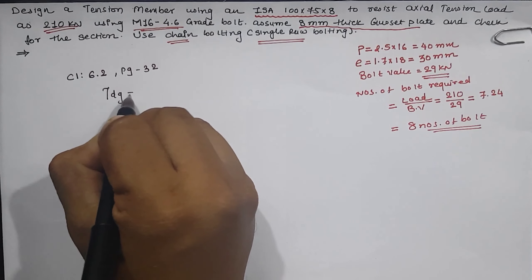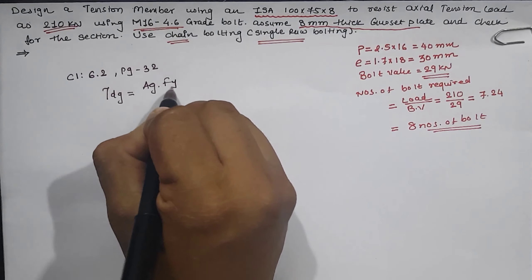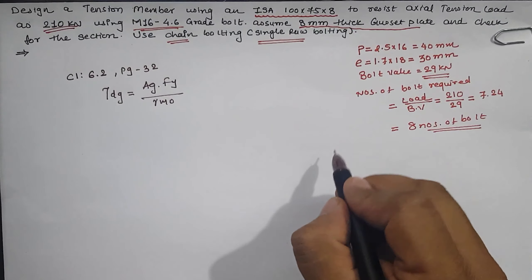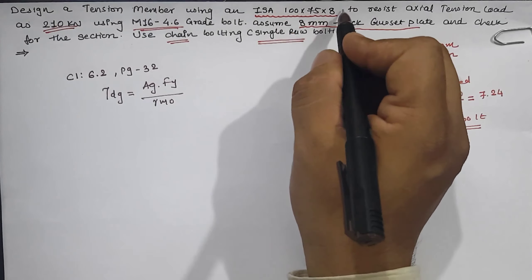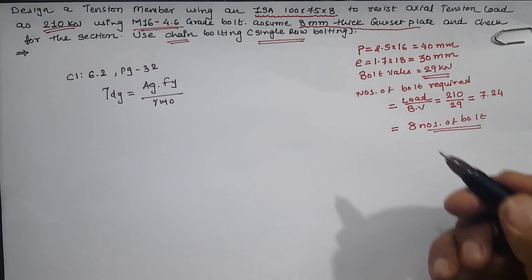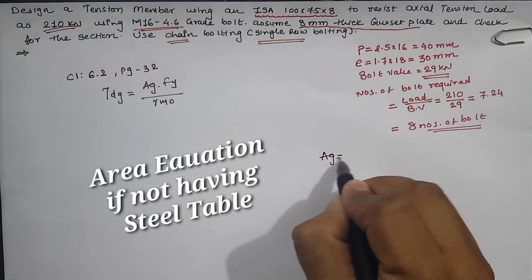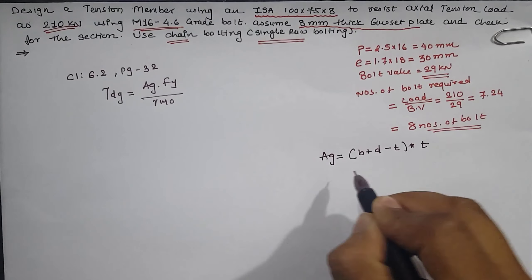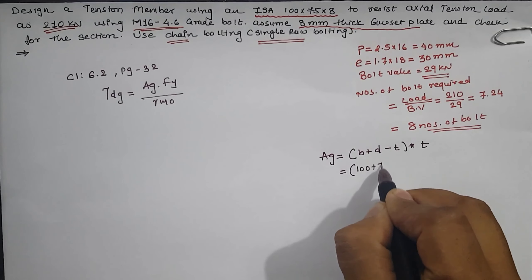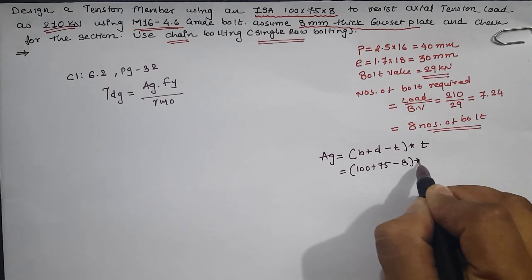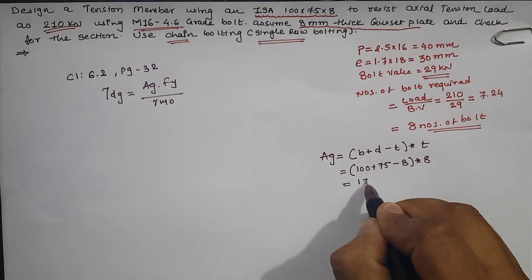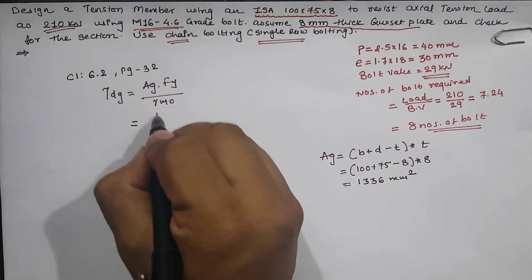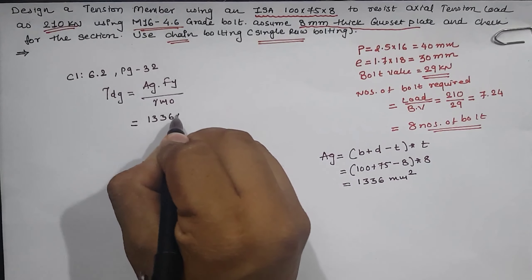From clause 6.2, page 32, Tdg = Ag·fy / γm0. For the gross sectional area Ag, we have ISA 100×75×8. If we do not have the steel table, the gross area can be calculated by the equation (b + d − t) × t = (100 + 75 − 8) × 8 = 1336 mm². Substituting into the Tdg equation: Ag = 1336, fy = 250, γm0 = 1.10.